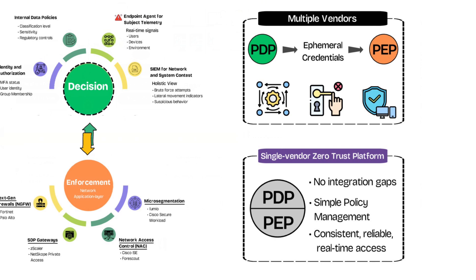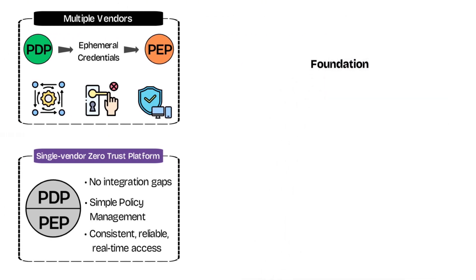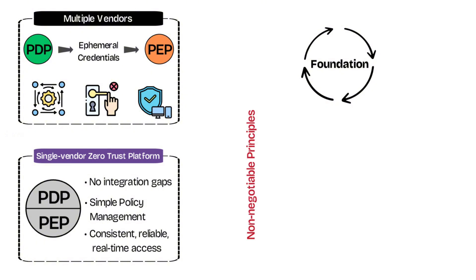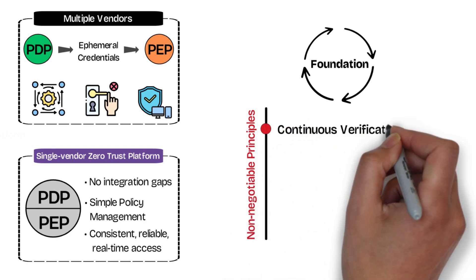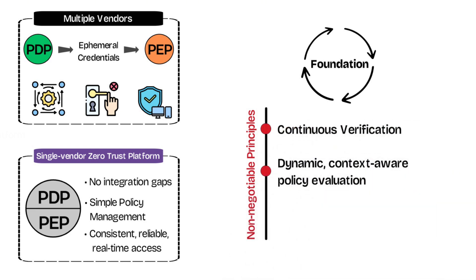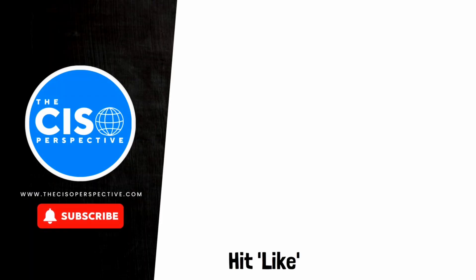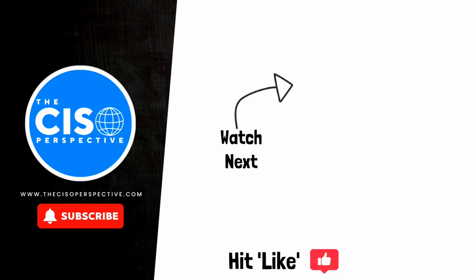Regardless of the vendor or architecture approach you choose, the foundation of any zero trust solution must remain the same. At its core, zero trust is anchored in a few non-negotiable principles: continuous verification, dynamic context-aware policy evaluation, and ephemeral access that can be revoked instantly if risk levels change or trust credentials are not met. That wraps up another video — I hope you found it informative. If you received any value, please hit like to give a boost in the YouTube algorithm, and subscribe if you'd like to see more videos like this.